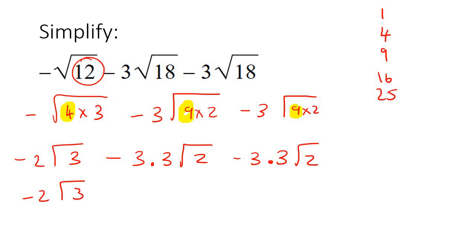So now we end up with negative two square root three, take away nine because that's three times three, and then take away another nine. And so these both have a square root two, so we could combine them. So our final answer would be negative 18 square root two.